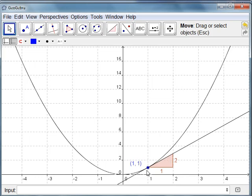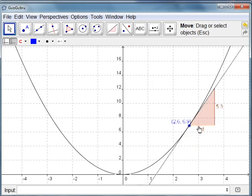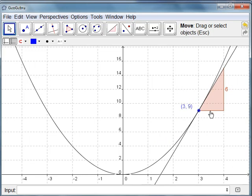So at one one the gradient is two. When x equals one the gradient is two. At two four the gradient is four. When x equals two the gradient is four. At three nine the gradient is six. When x equals three the gradient is six. So as you can see what's happening is that the gradient always seems to be double the x part of the coordinate.